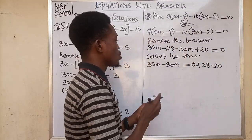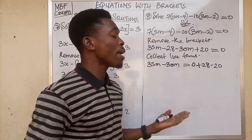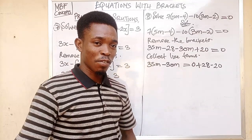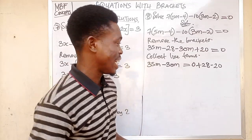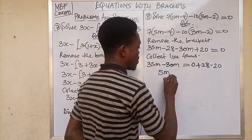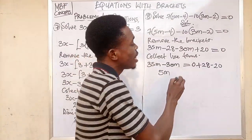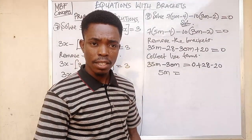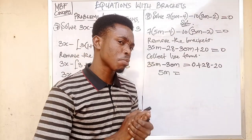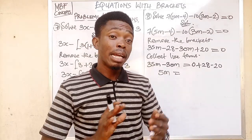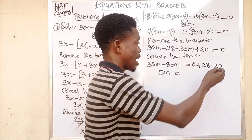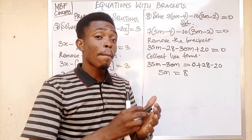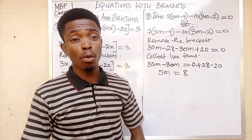Removing 30m from 35m gives us 5m. Then removing 20 from 28 gives 8, and adding 8 to 0 still gives 8. So the right-hand side is 8. The next step is to divide both sides by the coefficient of the variable, which is the third step.